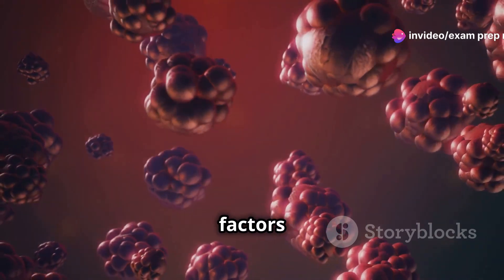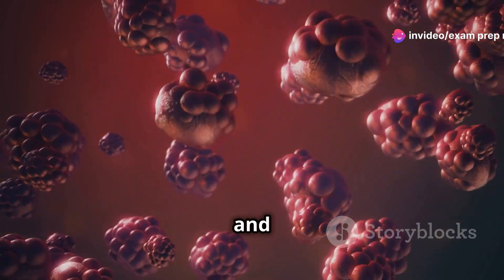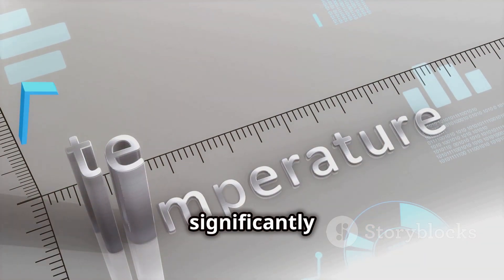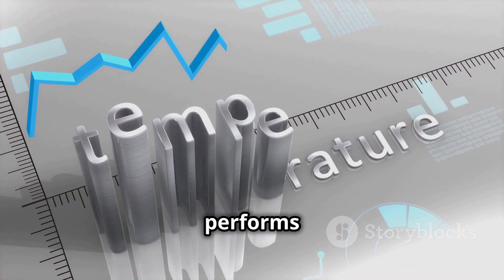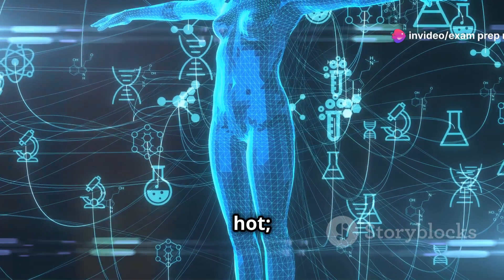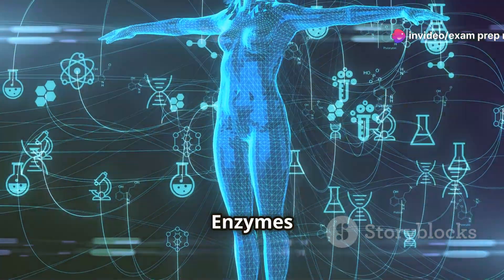These conditions include factors like temperature, pH and substrate concentration. Temperature is a big one. It can significantly influence how well an enzyme performs its job. Think about how you feel when it's too cold or too hot. You slow down, right? Enzymes are similar.